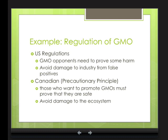A relevant example in the news is the regulation of genetically modified organisms. The US uses what they call substantial equivalency — if a GMO crop is substantially equivalent to one already being grown, it's up to opponents to prove harm is being done, which avoids false positive claims and damage to industry. Canada takes a more precautionary approach, requiring those who want to promote GMOs to prove they are safe. So the burden of proof sits in different places under these two frameworks, illustrating how the precautionary principle plays out in real politics and environmental action.